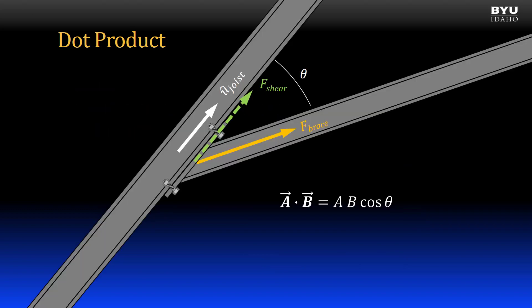Going back to our structural engineering example, if I define the direction of the joist with a unit vector, I can find the magnitude of the component of the brace force that causes shear in the bolt with the dot product. I take as vector A the brace force and as vector B the joist unit vector. I can write it as the magnitude of the brace force times the magnitude of the unit vector, which is 1, times the cosine of the angle between the two vectors theta. This will give me the force component parallel to the joist and causing shear in my bolts.